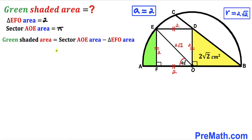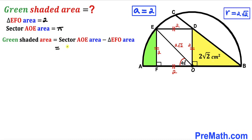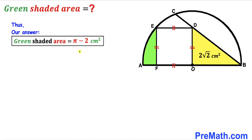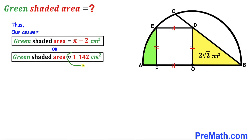For our final step, the green shaded region area = sector AOE area − triangle EFO area = π − 2 cm². Thus the area of the green shaded region is (π − 2) cm², which is approximately 1.142 cm². That's our final answer. Thanks for watching and please don't forget to subscribe for more exciting videos.